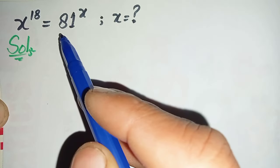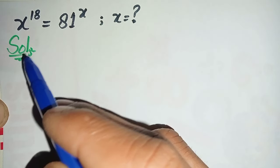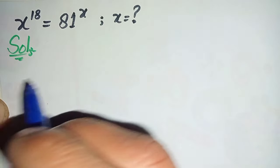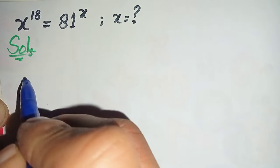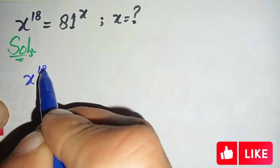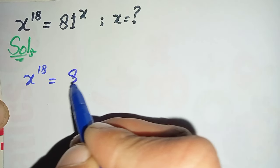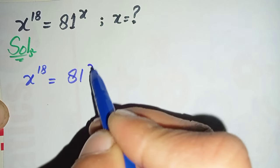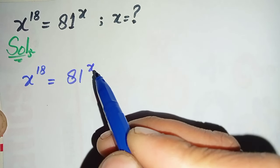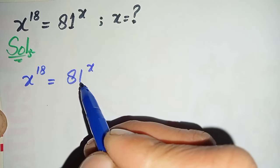To solve this math problem properly and step by step, first we will write the solution and then write the question again. So the question is x raised to power 18 is equal to 81 raised to power x. First of all, we will try to eliminate this x from the power on the right hand side.